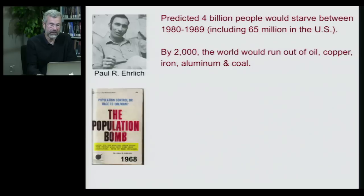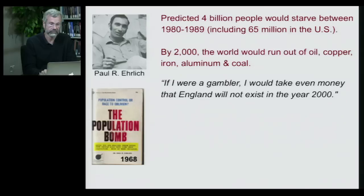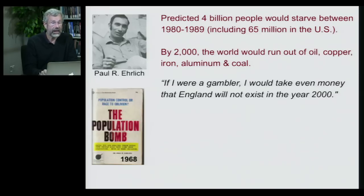By the year 2000, Ehrlich predicted that the world would run out of oil, copper, iron, aluminum, and coal. I don't know how many of you know people who starved to death in the U.S. between 1980 and 1989 — I doubt you do. And you can look around and see plenty of oil, copper, iron, aluminum, and coal. He went on even more extraordinarily to say: 'If I were a gambler, I would take even money that England will not even exist in the year 2000.' You may have been to England by now — I assure you, it's still there. Ehrlich was wrong. But this gave rise to a whole alarmist view of environmentalism and ecology.